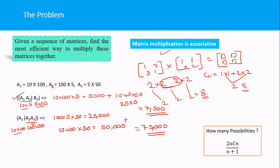The dynamic programming technique helps us find the most efficient way to multiply n matrices. For n matrices, there are C(2n, n)/(n+1) possible orderings. The dynamic programming algorithm finds the best choice — the one with the minimum number of scalar multiplications. In the next session, we will observe the dynamic programming strategy in detail.